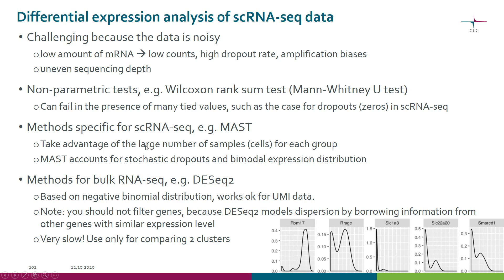There are different types of tests. The default in Seurat and in Chipster is the non-parametric Wilcoxon rank sum test. However, it has the limitation that it can fail in the presence of many tied values — when many genes get the same rank. This is of course the case here because we have many dropouts or zeros in the data.